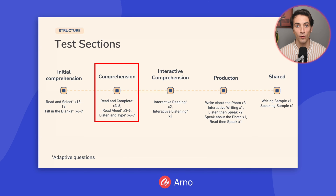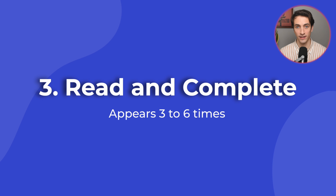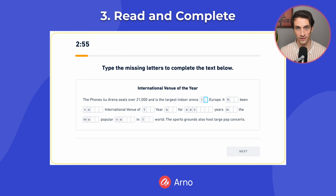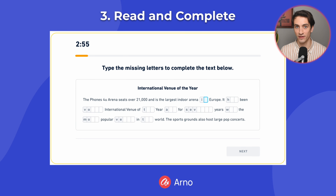Next, you will move on to the Comprehension section, and there are three question types in this section. First is Read and Complete. You will see this question type three to six times. You will be given a paragraph, and several words will be missing letters. You have to fill in the missing letters for all of the words. This question type is very similar to Fill in the Blanks.